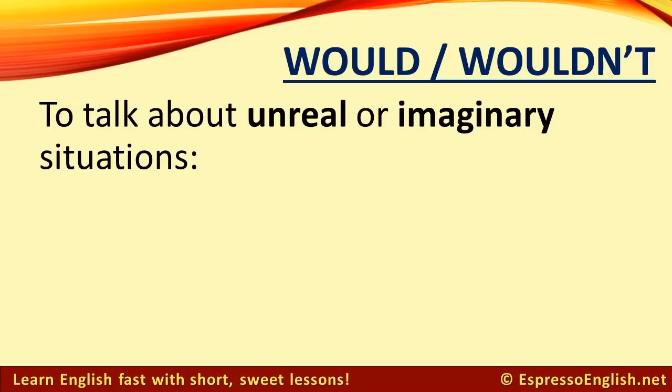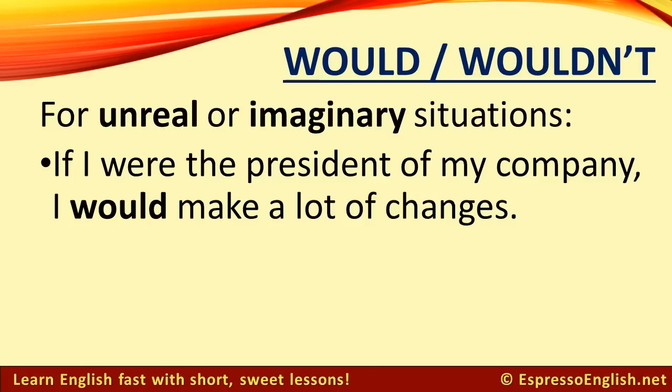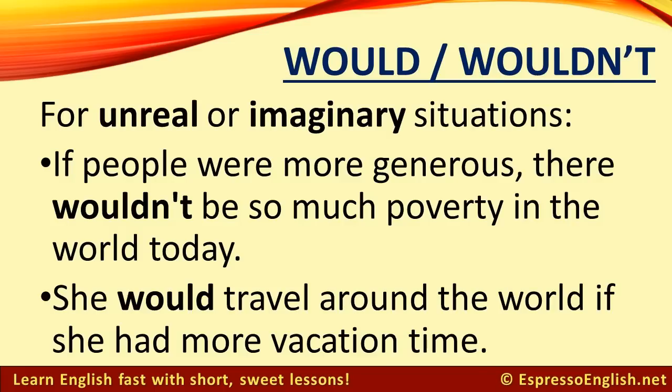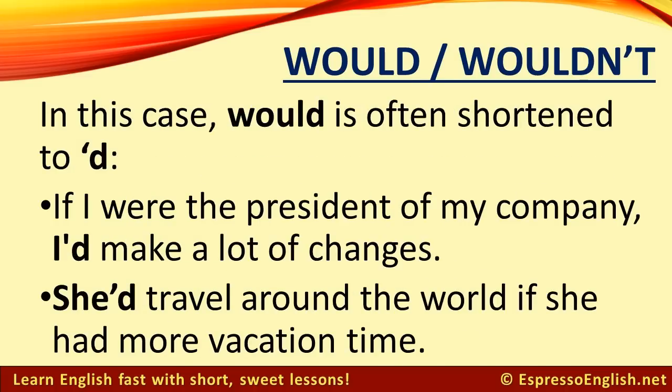Use would and wouldn't to talk about unreal or imaginary situations. For example: If I were the president of my company, I would make a lot of changes. If people were more generous, there wouldn't be so much poverty in the world today. She would travel around the world if she had more vacation time. In this case, would is often shortened to 'd — for example, I'd make a lot of changes, or she'd travel around the world if she had more vacation time.